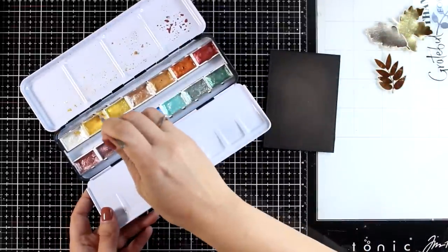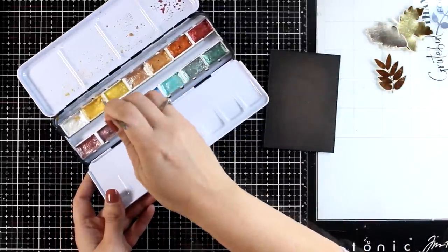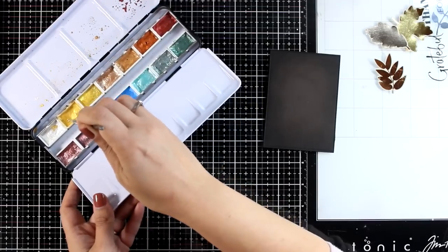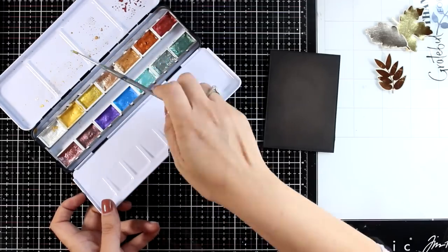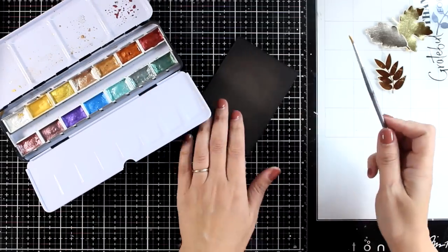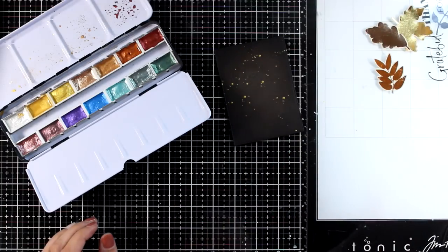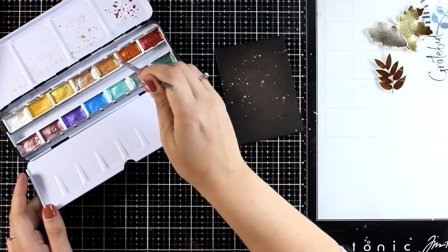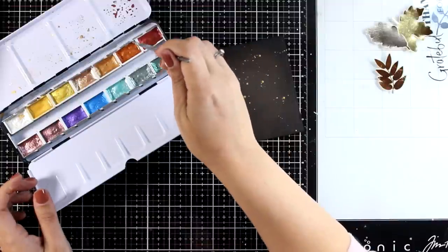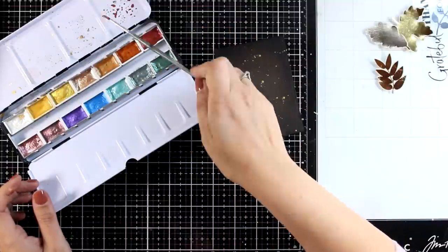And then, since this is an otherwise very plain clean and simple card, just to add some interest at the background, I'm going to use the metallic watercolors. This is a pan set by Altenew and I'm going with the gold and the copper one. I'm just adding a few splatters here and there, making sure that I mainly concentrate them at the top so that I have some empty space at the bottom for the sentiment later on.